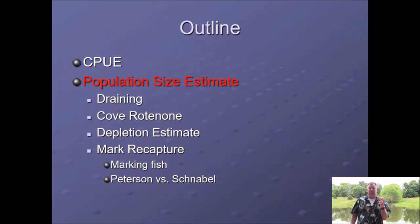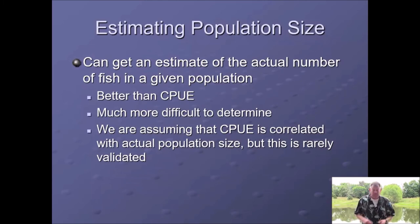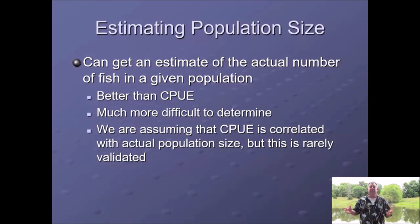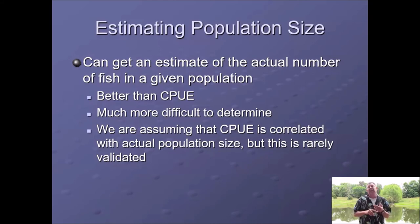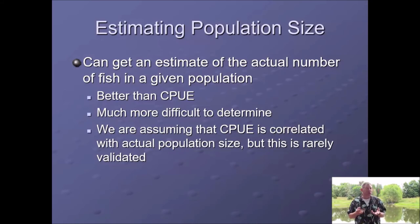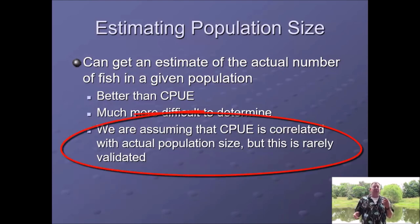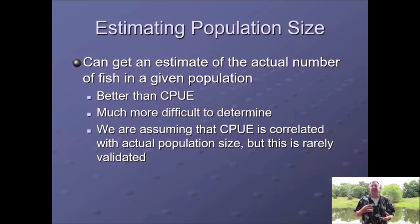We can estimate the number of fish in the population, so let's talk about several different ways to do that. This would be better than catch per unit of effort because you don't have to worry about standardizing effort — you're getting an estimate of the total number of fish. Here in my pond, I could estimate how many fish are in it, measure how big the pond is, and that gives me a density estimate better than CPUE, but it's much more difficult and takes more total effort. A good strategy would be to get an estimate of density while simultaneously getting an estimate of CPUE and see if the two are correlated. If they are, you can use CPUE in the future because it's a lot easier to do.